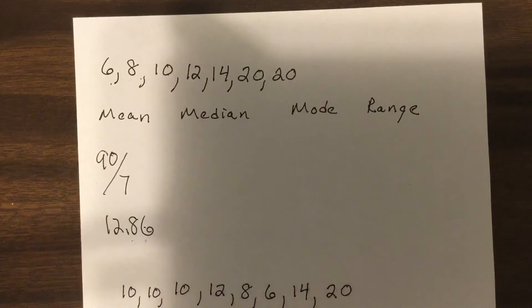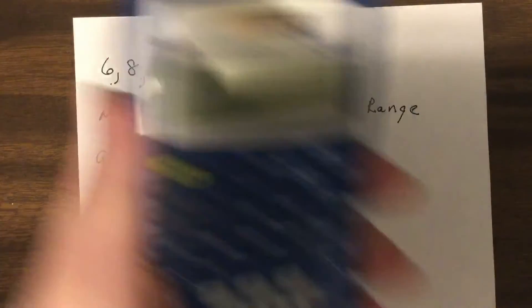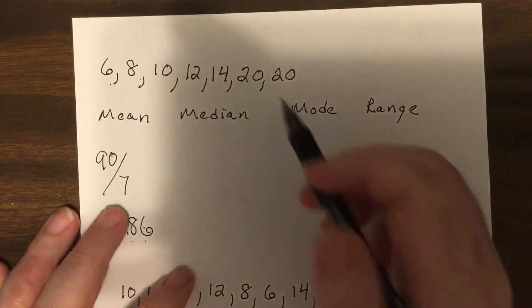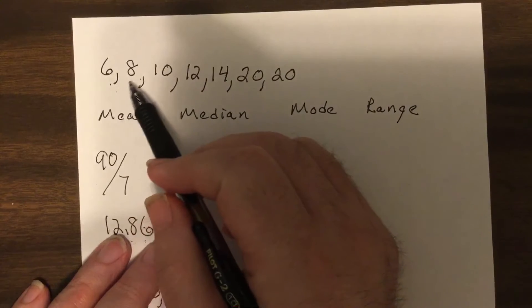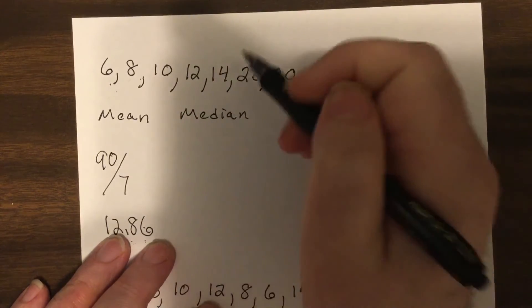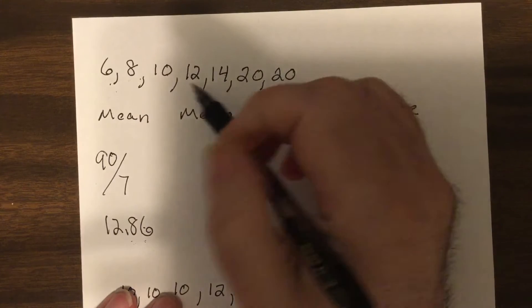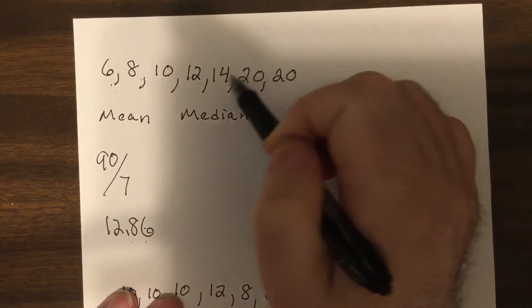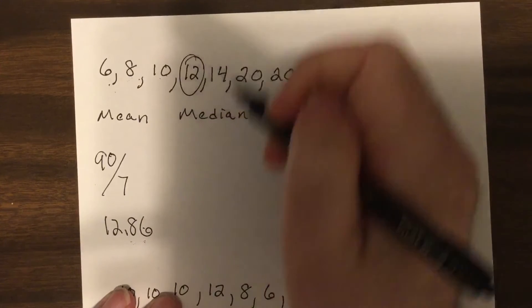Median, you have to line up the numbers highest to lowest or lowest to highest, then it's the one right in the middle. So one, two, three, one, two, three, so the middle one would be 12.